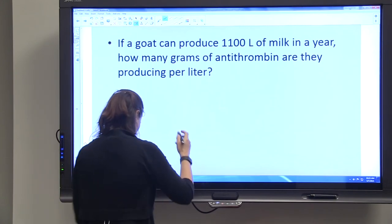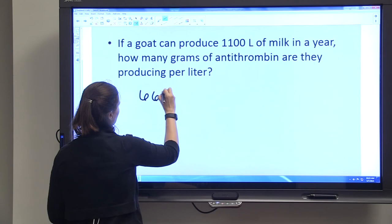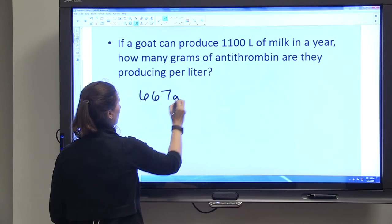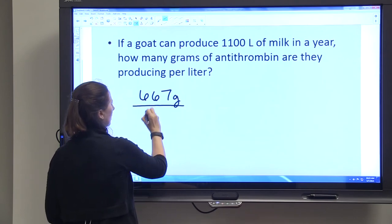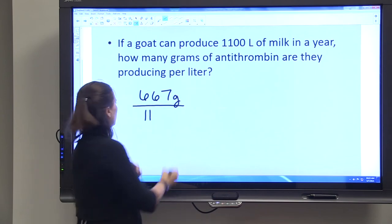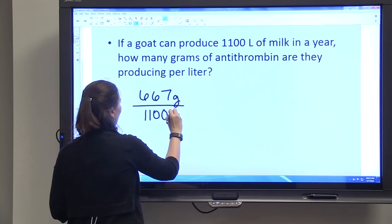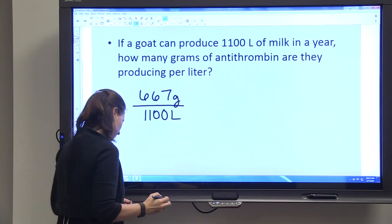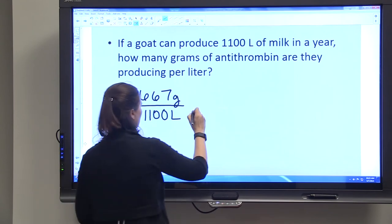So we know that they have 667 grams of antithrombin per year, and that we've just been told in this problem is in 1100 liters, and we want to solve to determine how many grams are being produced in one liter.